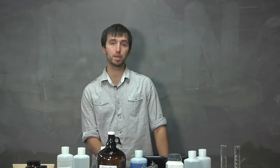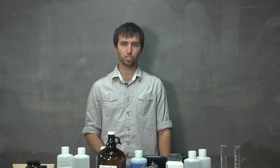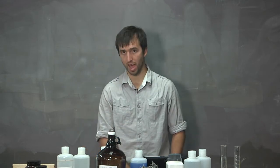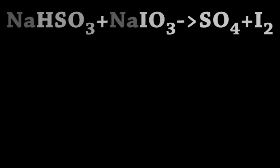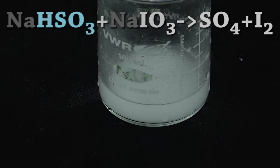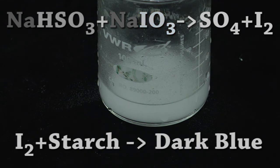So, in this lab, we will be reacting HSO3 and IO3 according to the following reaction. In this lab, we will be reacting sodium bisulfate with sodium iodide. Now, when pure iodide touches starch, a dark blue color arises.